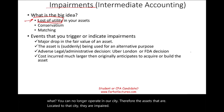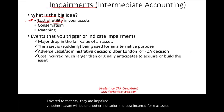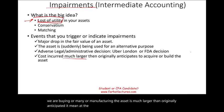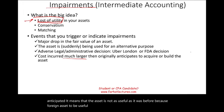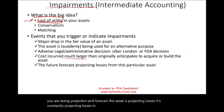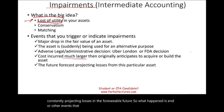Another indication is when the cost incurred for an asset is much larger than originally anticipated, meaning it's not as useful as expected — because for an asset to be useful, the benefit must exceed the cost. Also, if projections show the asset will generate losses in the foreseeable future, that too is an impairment trigger.